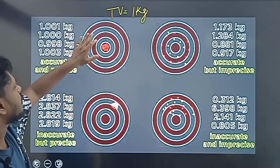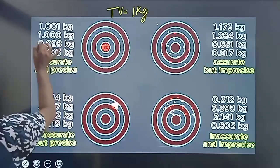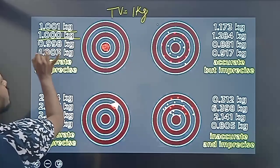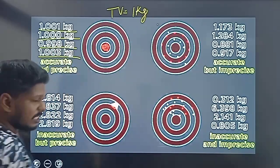For example, what is the true value? The true value is 1 kg. You might get measurements like 1.001, 0.998, or 1.003.